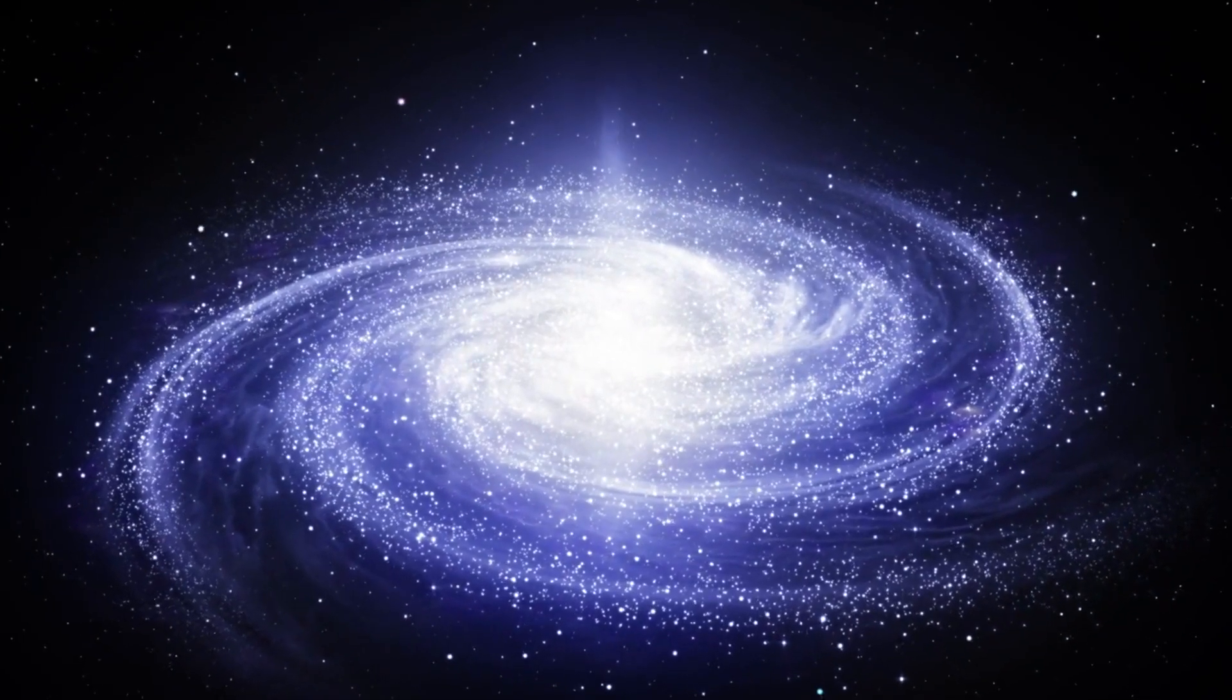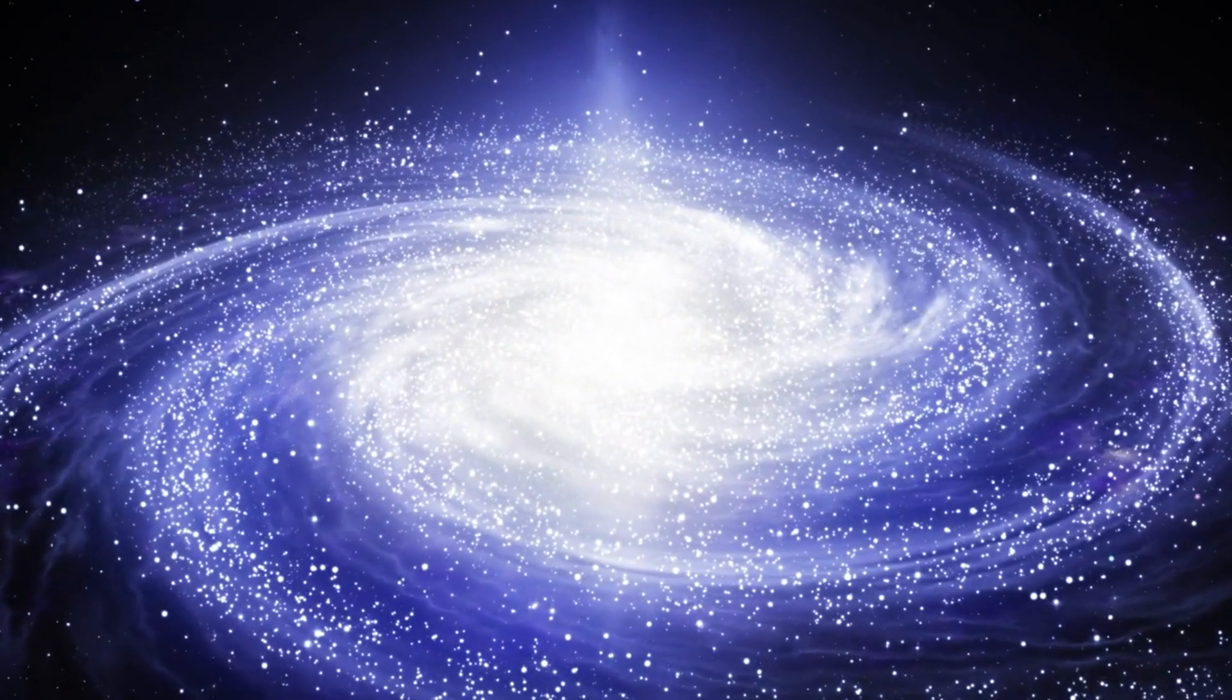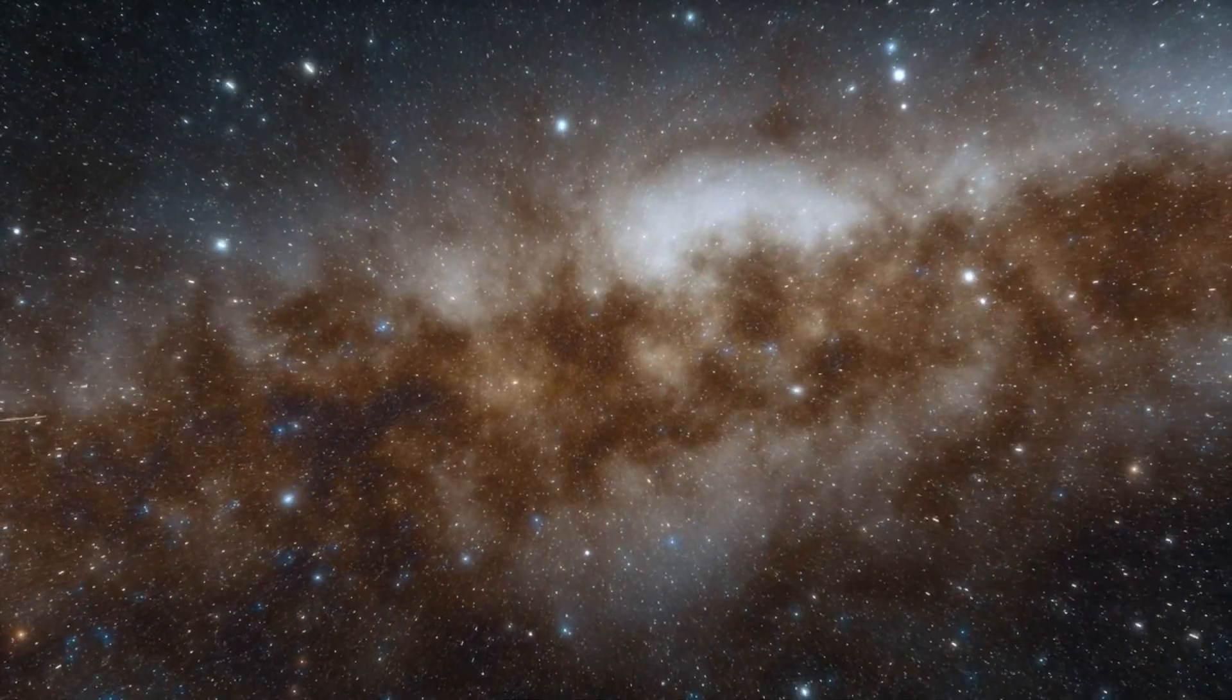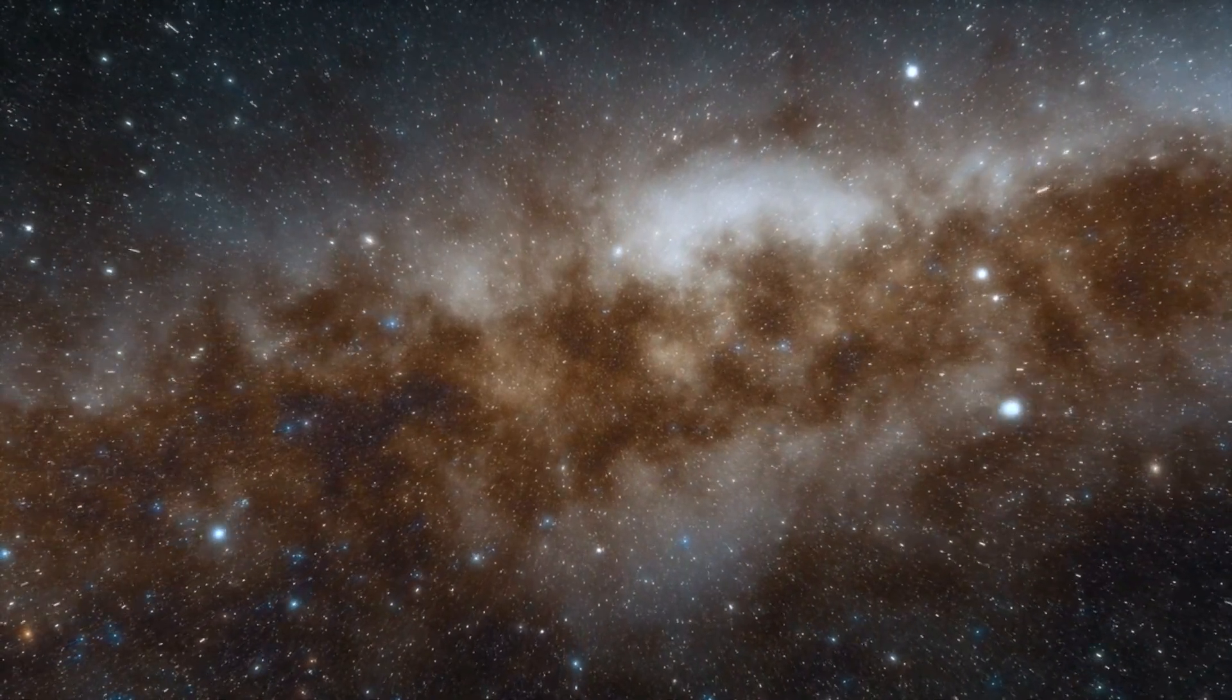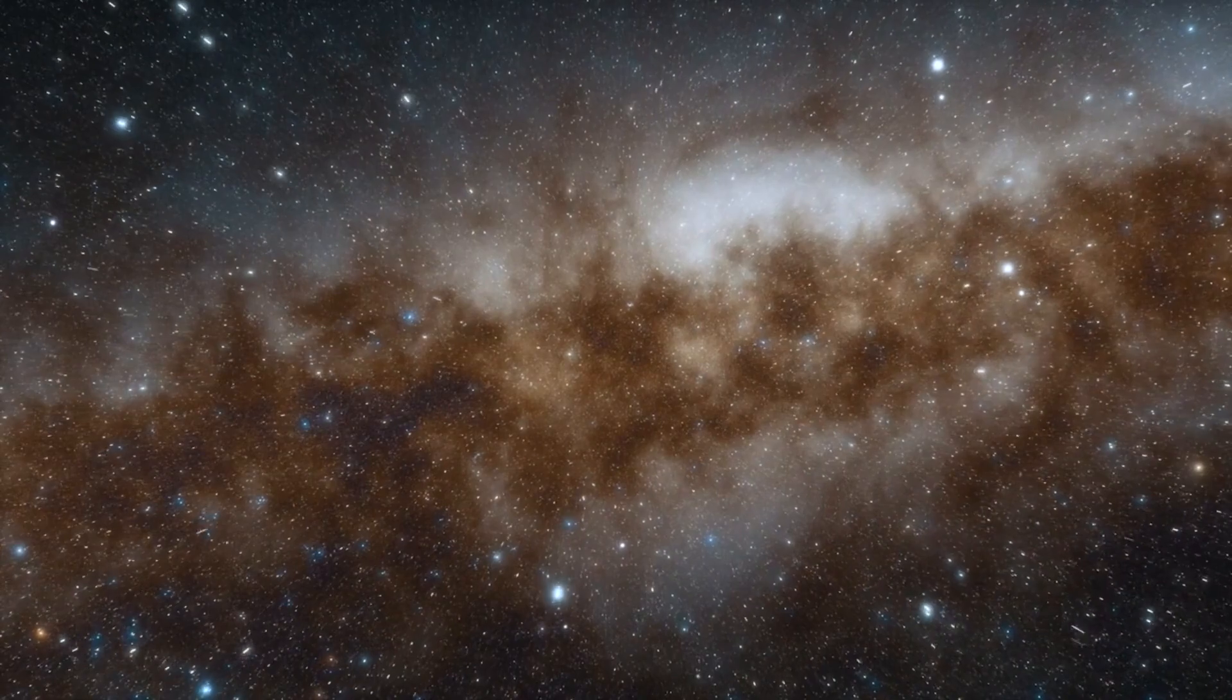It's important to note that the Sun's orbit is just one component of the complex and dynamic structure of the Milky Way galaxy. The galaxy contains billions of stars, gas, dust, and other celestial objects, all interacting through gravitational forces and affecting each other's motions.